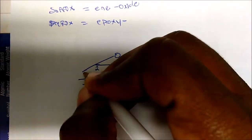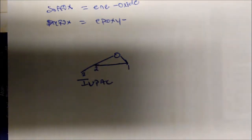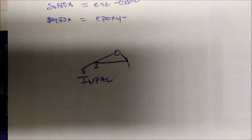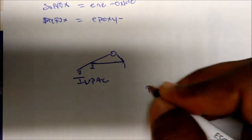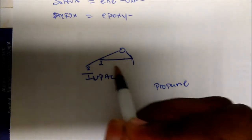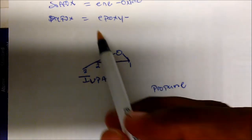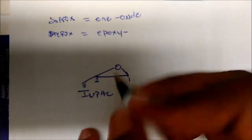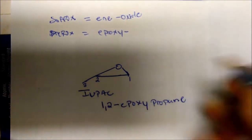So this is carbon one, two, three. We want to give the epoxide the lowest number possible — this gives us one, two versus two, one. Our longest continuous chain is propane, so the parent chain is propane. We locate the substituent, which is the epoxide. As a substituent, its prefix is 'epoxy,' so on carbons one and two, this is 1,2-epoxypropane.